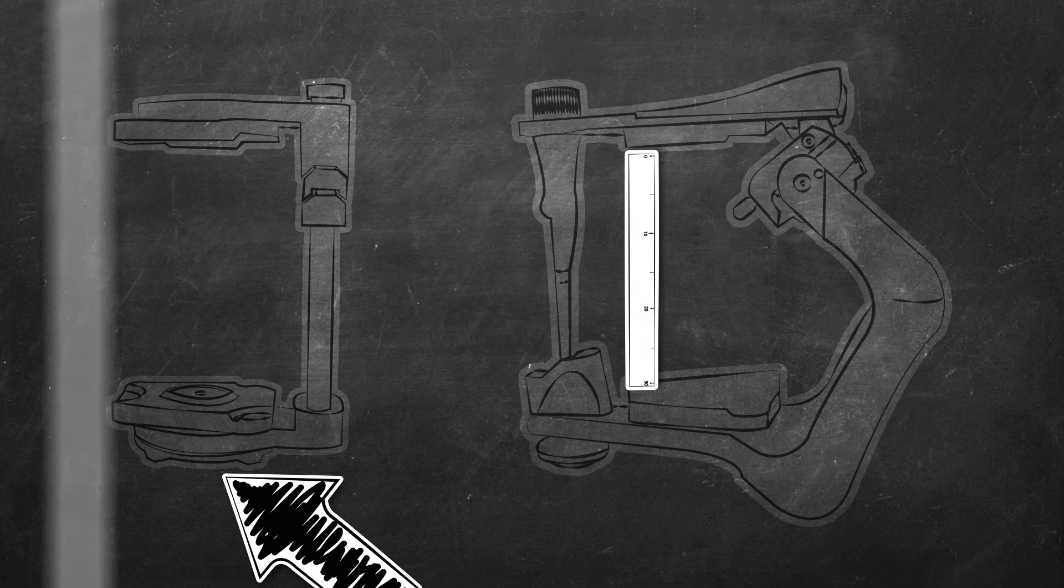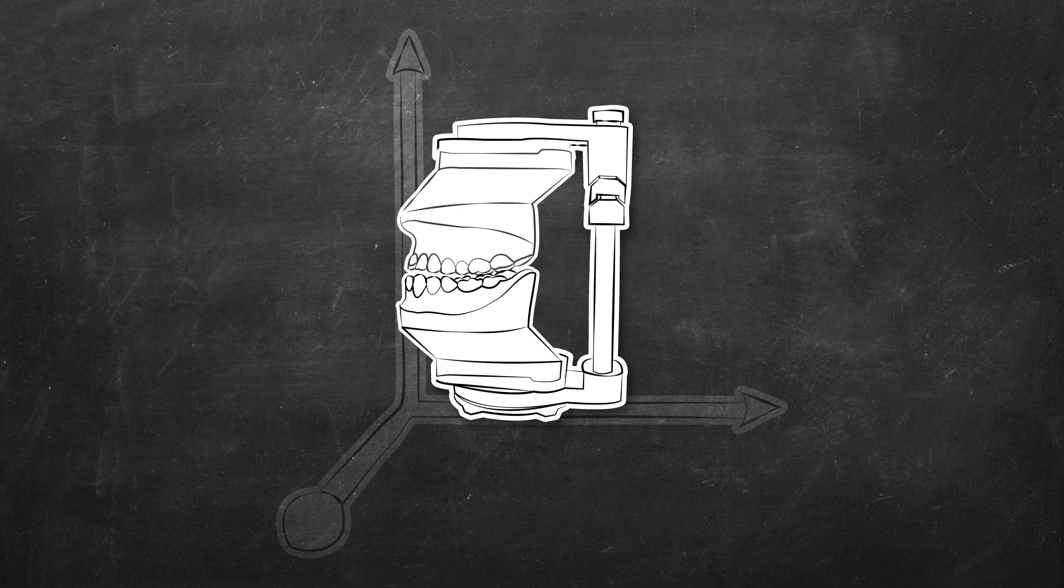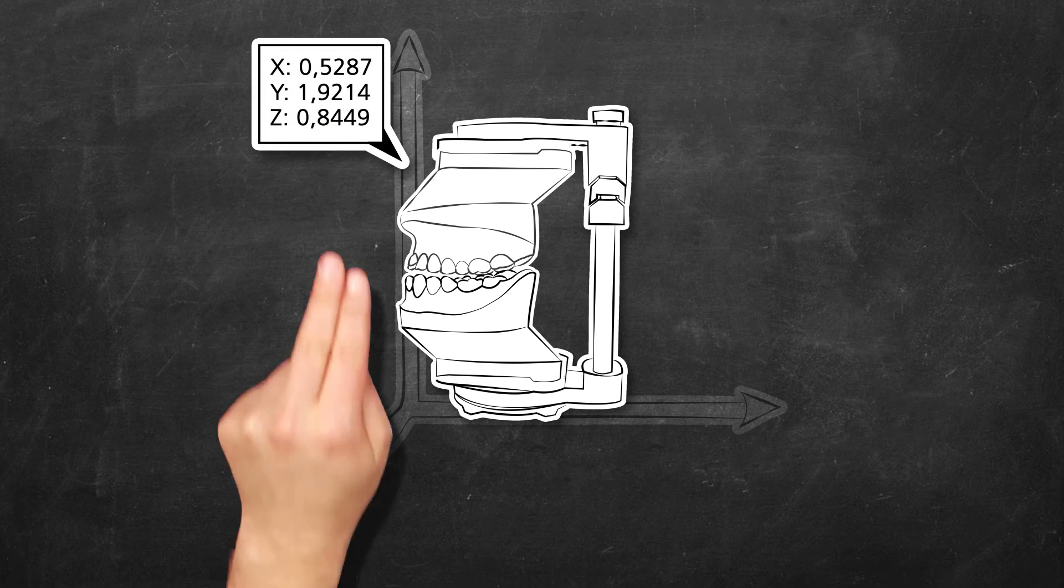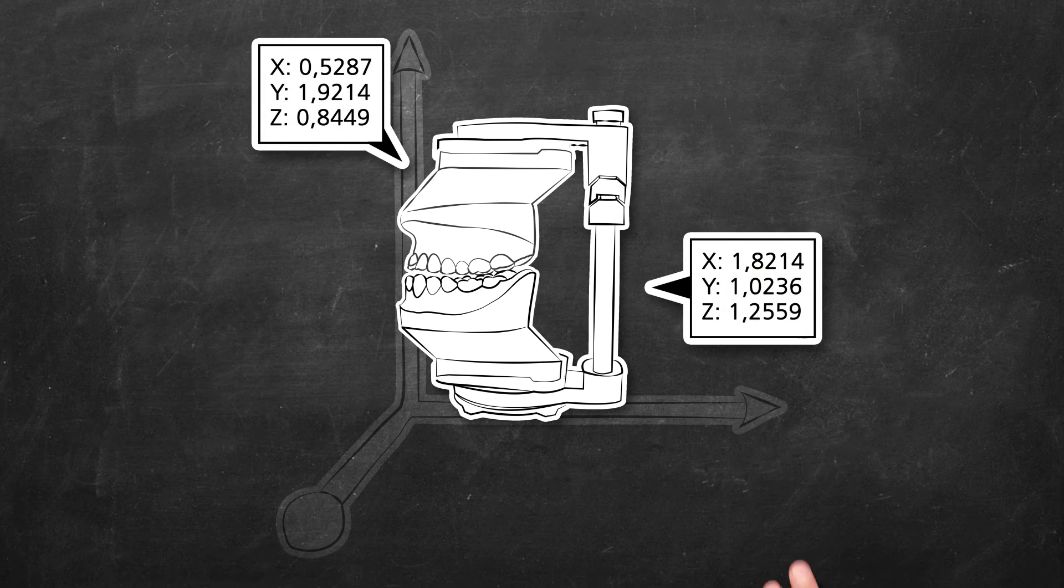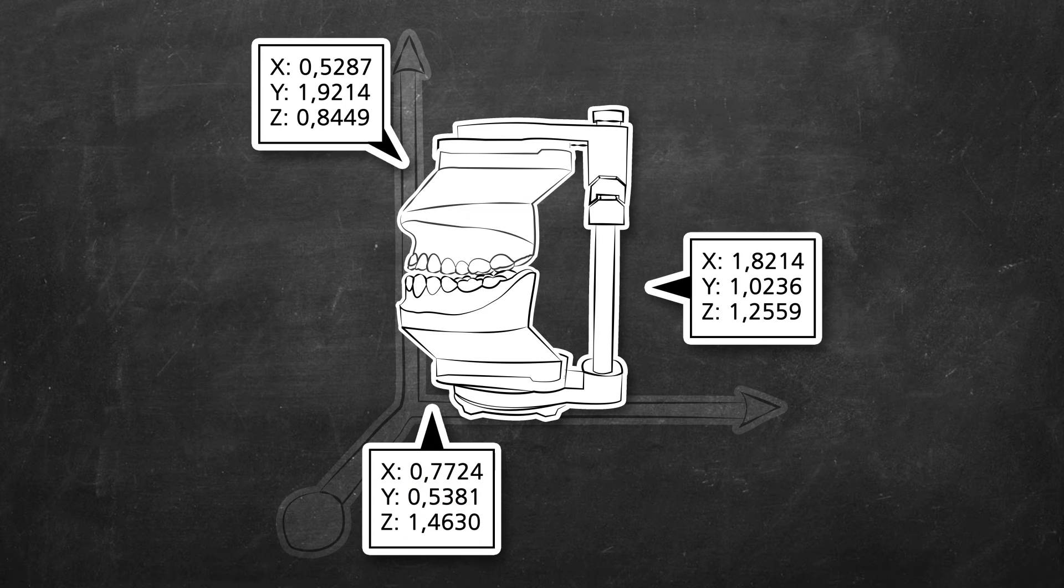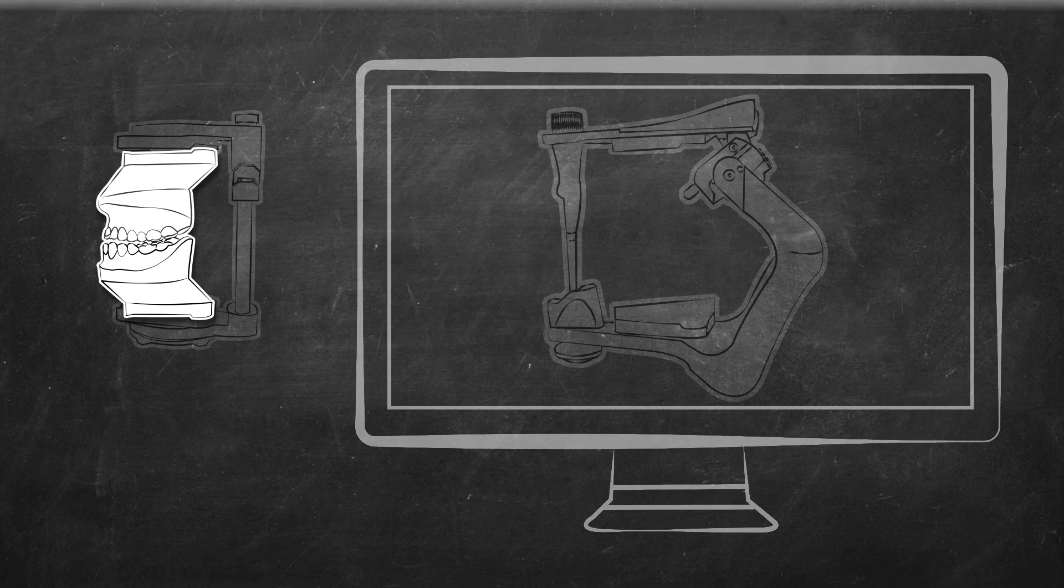As the Fixator is calibrated, the scanner knows its exact position in the coordinate system and can thus determine the position of the jaws in relation to the Fixator and thus the condyles.